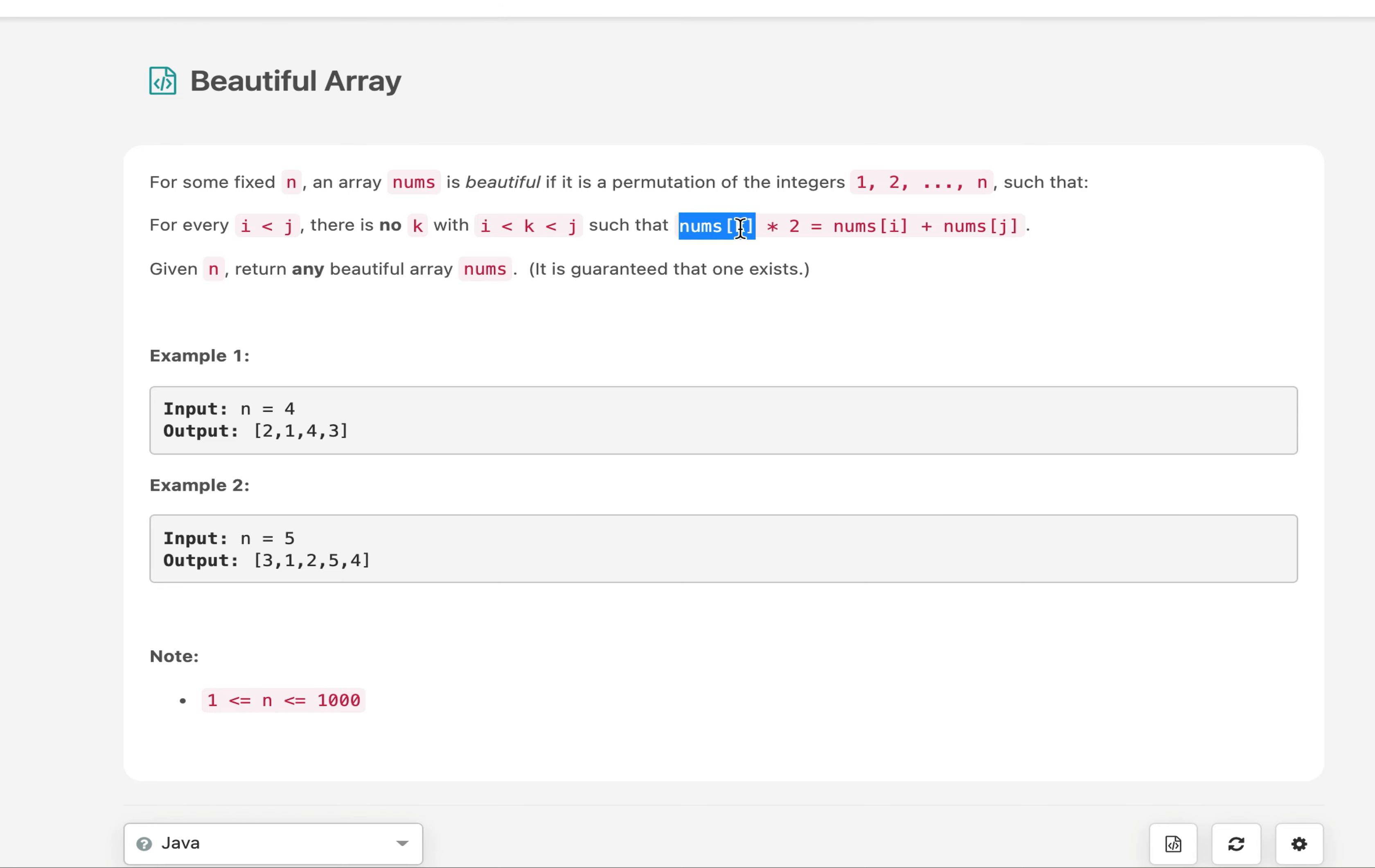We need to return any possible beautiful arrangement for a given size n. Let's try and understand it by an example: n equals 4, the array [2,1,4,3] is such an arrangement. There can be multiple arrangements for the same length. We need to return one such possible arrangement.